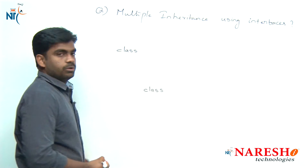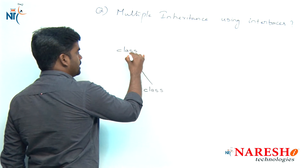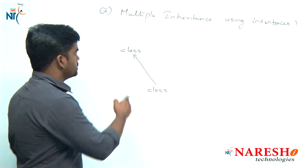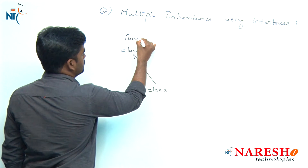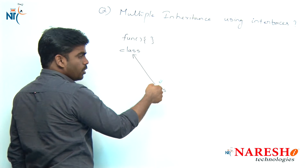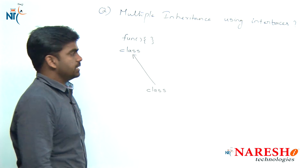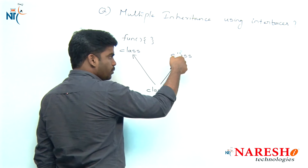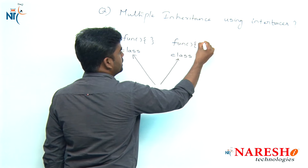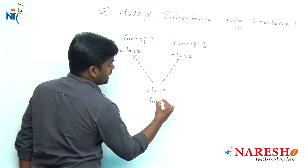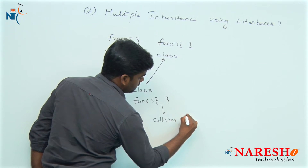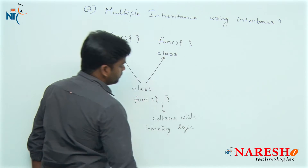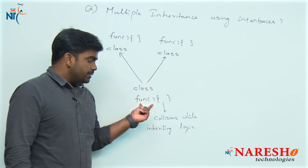Suppose we are using classes — here is one class, and here is one more class extending from another class. Whenever a class has the definition of one functionality, that will automatically be inherited to the extended class. Now suppose there is one more class, and if the second class also has the same functionality with a different logic, then it will face a problem while accessing the logic — there will be a collision.